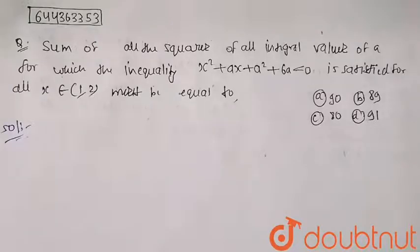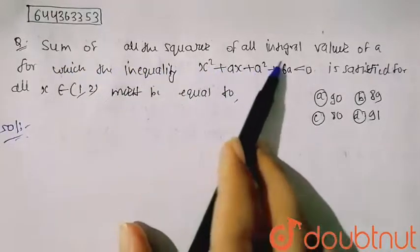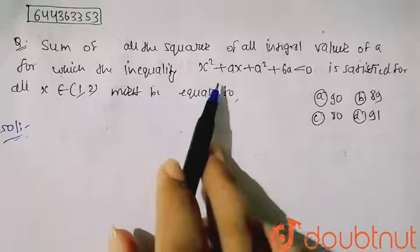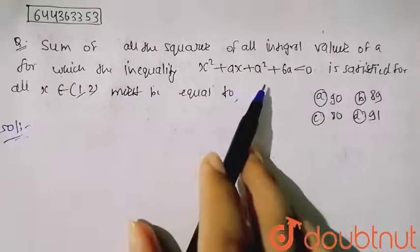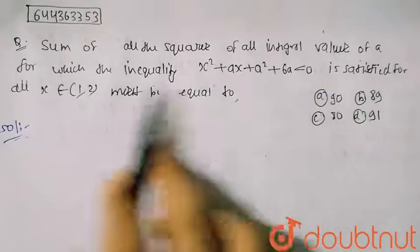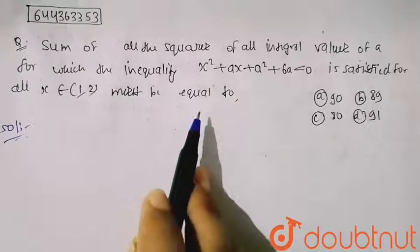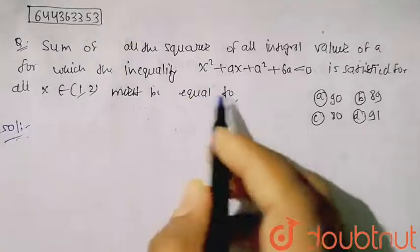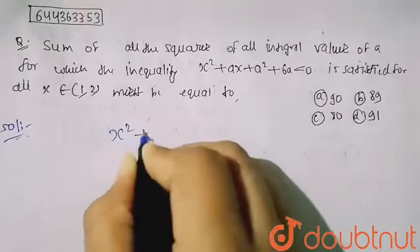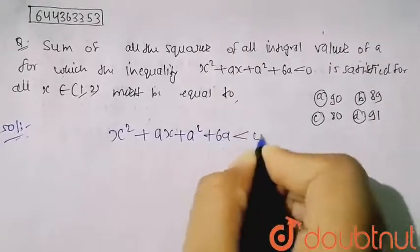Hello friends. So in this question, the sum of all the squares of all the integral values of a for which the inequality x² + ax + a² + 6a < 0 is satisfied for all x belonging to [1, 2] must be equal to. The inequality given is x² + ax + a² + 6a < 0.